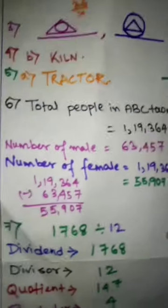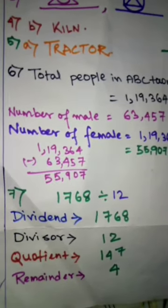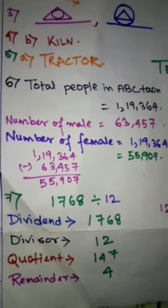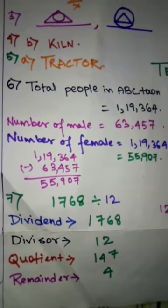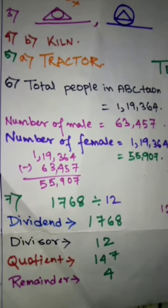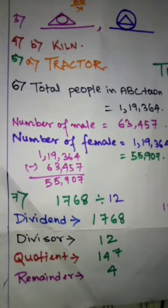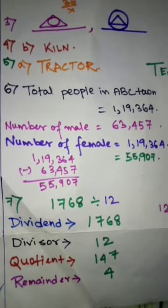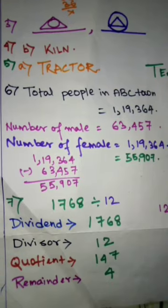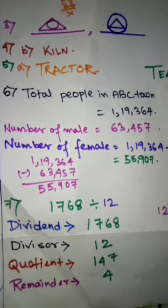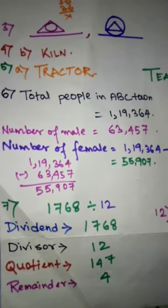Moving to question number 7. As you can see, this is a division problem and you have to find out the dividend, divisor, quotient and remainder. As you know, the dividend is the number that is to be divided. Divisor is the number that is used to divide. So dividend is 1,768 and the divisor is 12.